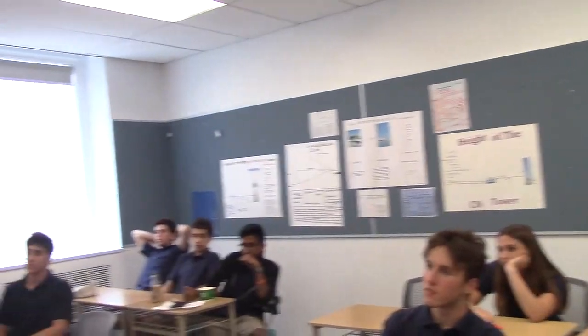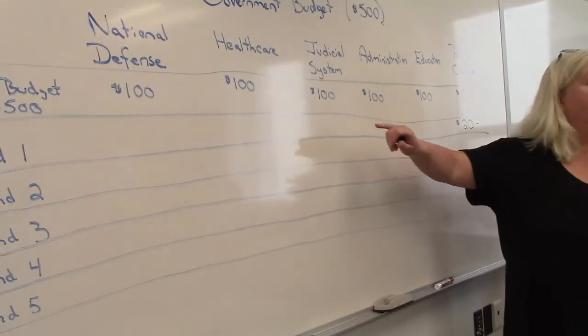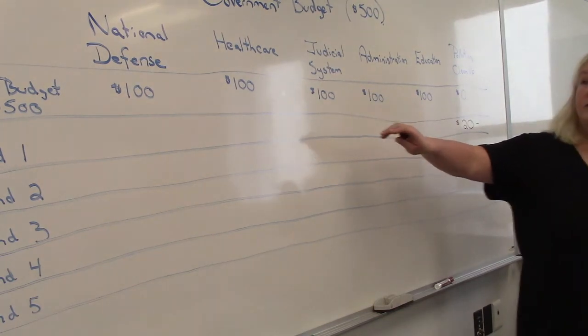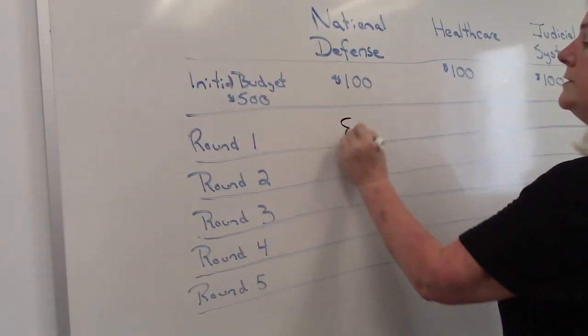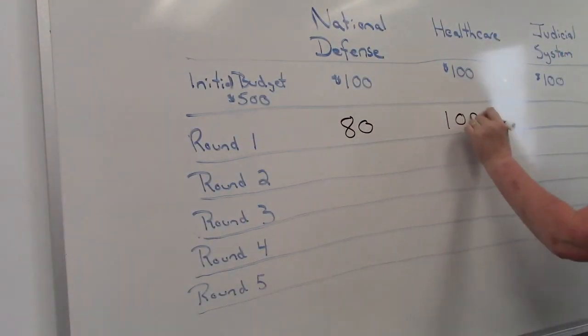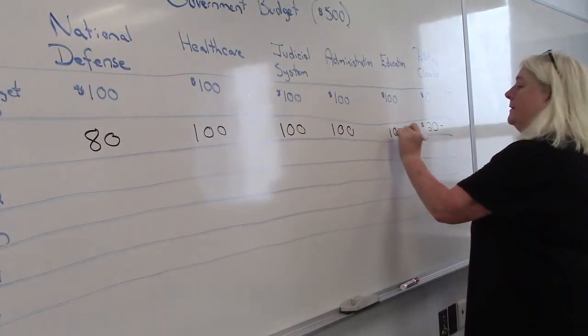National defense. We're going to assume all the initial allocations stand, so do we have any opposition to taking it from national defense? National defense is going to be reduced from $100 to $80. Can I have a volunteer worker come and take the first handful away?